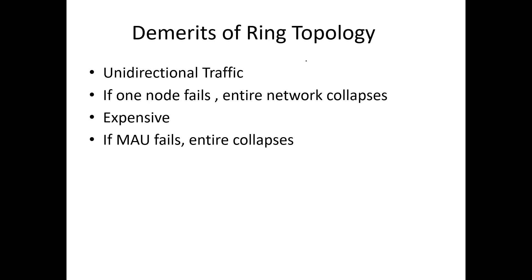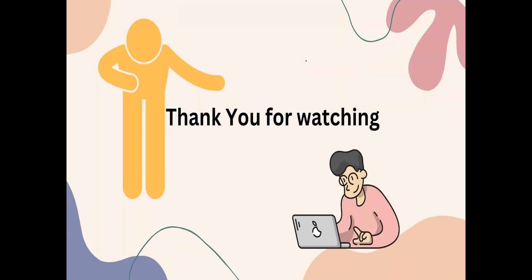As far as the demerits of ring topology are concerned: the flow of data is unidirectional — after sending data to one node, it sends data to the next node in turn, which creates unidirectional traffic. If one node fails, the entire network collapses. Ring topology is also expensive because of the cost of the multi-station access unit, cables, and nodes. Additionally, if the multi-station access unit fails, the entire network, including all nodes, becomes non-working.